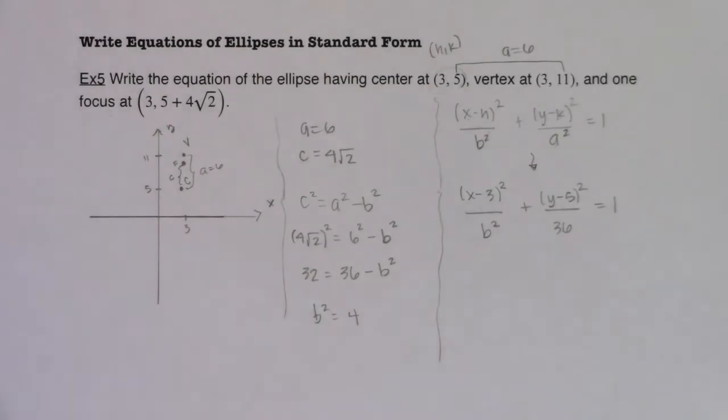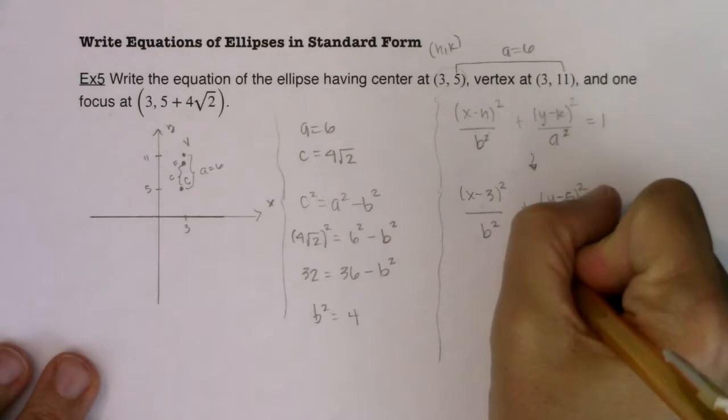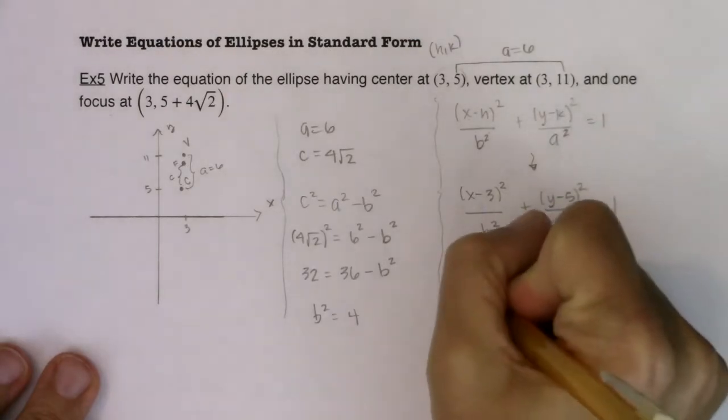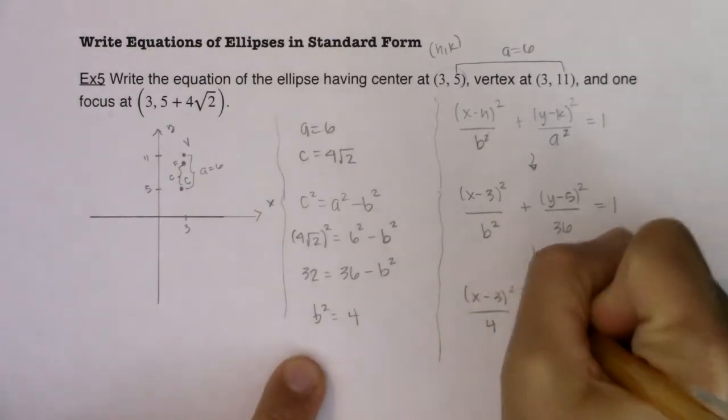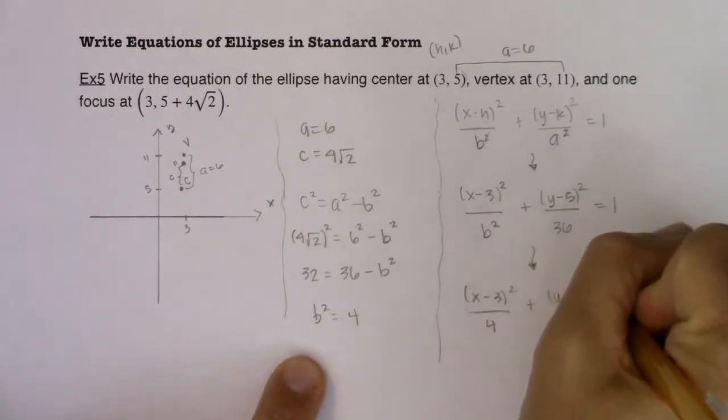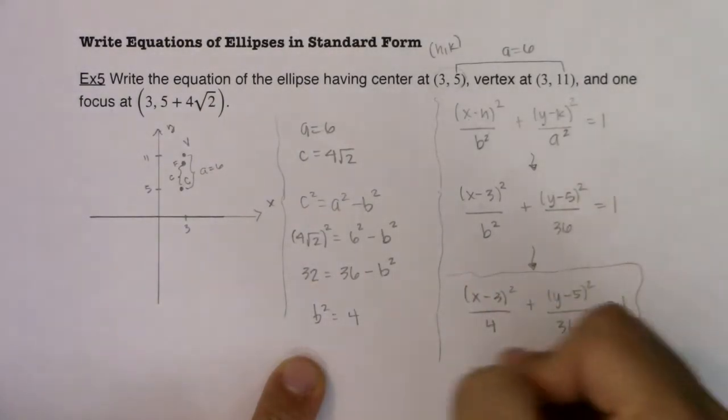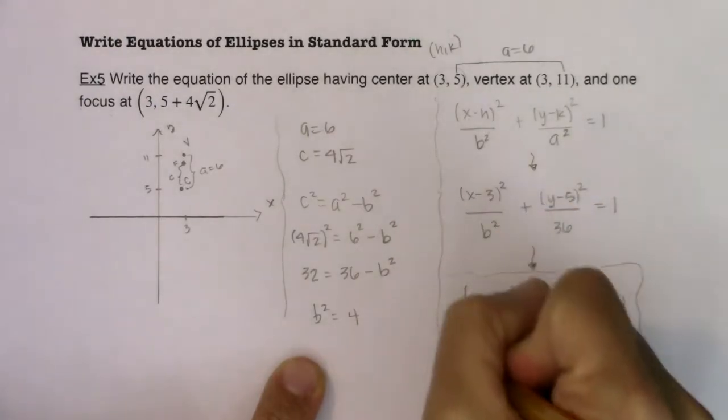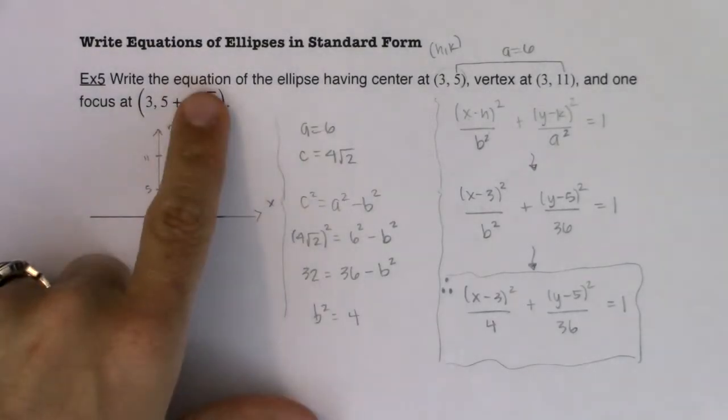So now I know x minus 3 squared over b squared, which is 4, plus y minus 5 squared over 36 equals 1. And here it is. There's my answer. I'll make sure I put a little therefore. And that is the answer to this example. I have found the equation of an ellipse.